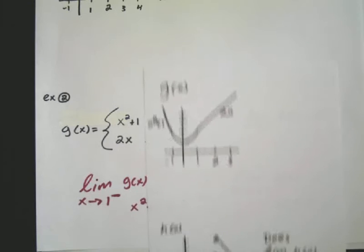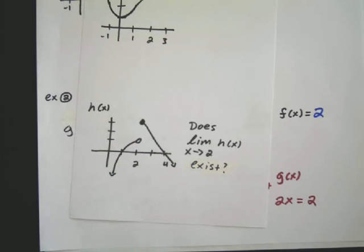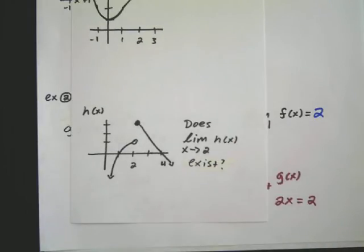Now, one last thing is a bizarre function like this, h of x, and this will lead us into the next section, section 1.2. Do you think this limit at 2 exists?